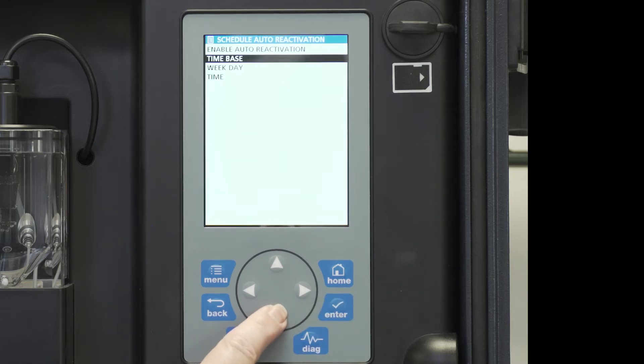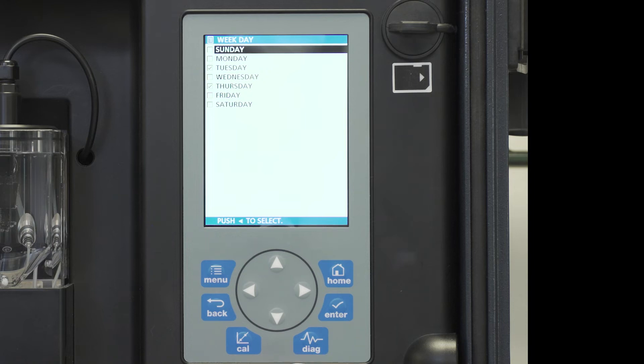We want to do this on weekdays. We want to do this for Monday and for Thursday. So I scroll down to Monday, hit the right arrow key.